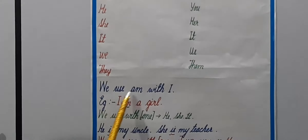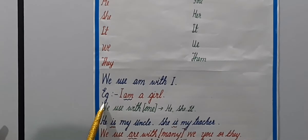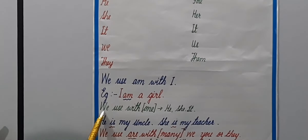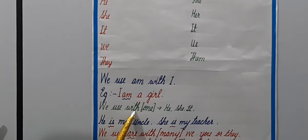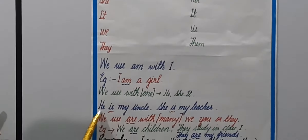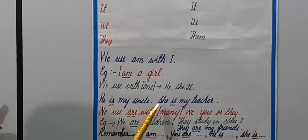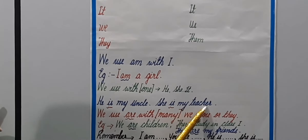We use 'am' with I. For example: I am a girl. We use 'is' with he, she, and it. For example: He is my uncle. She is my teacher.